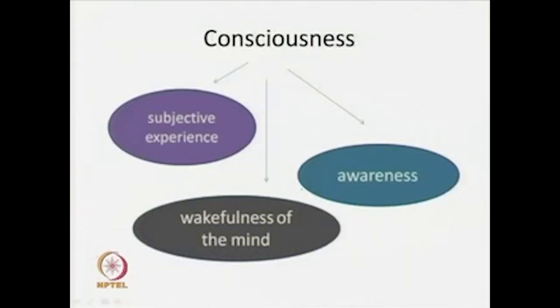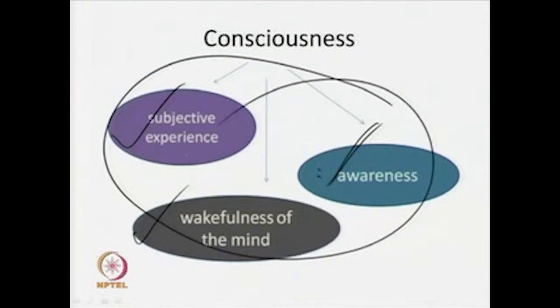Our conscious mind may mislead us into thinking that our circuitry is really simple, but most problems that we experience as easy to solve are really very difficult to solve, and they require very complicated neural machinery. This is principle three of evolutionary psychology. Consciousness, as we saw, is awareness — our subjective experience as perceiving, knowing, and remembering subjects, as subjects paying attention to something, and also the wakefulness of the mind.